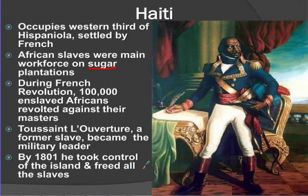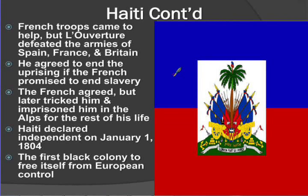By 1801, Toussaint Louverture took control of the island and freed all the slaves — an example of a slave revolt that was actually successful. French troops came to help, but Toussaint defeated the armies of Spain, France, and Britain. He agreed to end the uprising if the French promised to end slavery. The French agreed, but Napoleon later tricked him and imprisoned him — he died in imprisonment. Haiti declared independence on January 1st, 1804, becoming the first Black colony to free itself from European control.